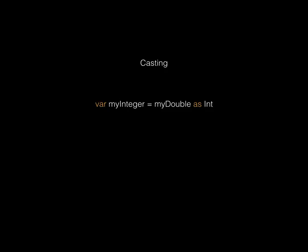One thing that has to happen quite a lot in Swift is casting — and it's a little more so than in Objective-C. Those are the two grammatical ways to cast data: either with `as`, or with an instantiation method.